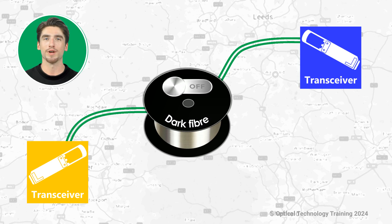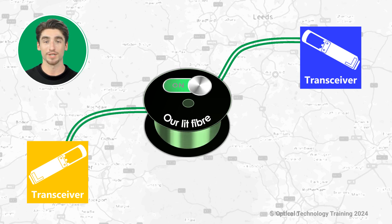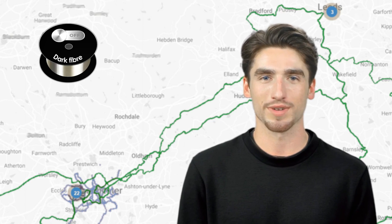If you need high-capacity network links for one of these applications or for a similar purpose, then you could potentially light them up yourself, with the right knowledge and equipment and access to a suitable fibre route of course. Many network owners publish maps showing the routes where they have Dark Fibre available, so you can identify suitable routes. The final connections into your building at each end will probably require new dedicated cables to be installed.